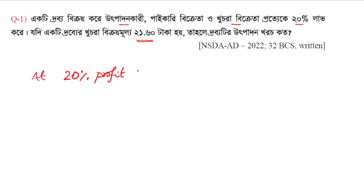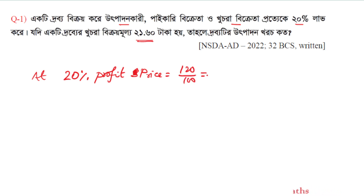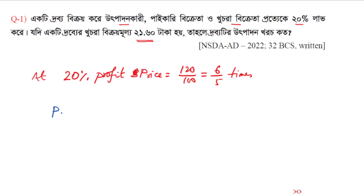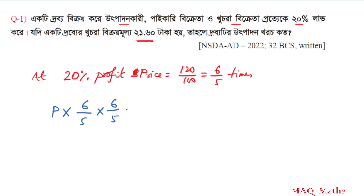At 20% profit, SP = CP × (120/100) = CP × (6/5). So when the producer sells at 20% profit, the price becomes 6/5 times the production cost. Then the wholesaler sells at 20% profit, so it becomes 6/5 times again. And the retailer also sells at 20% profit, making it 6/5 times once more.